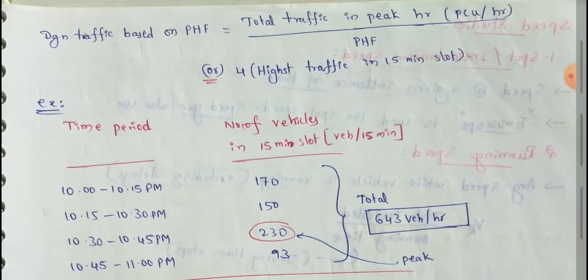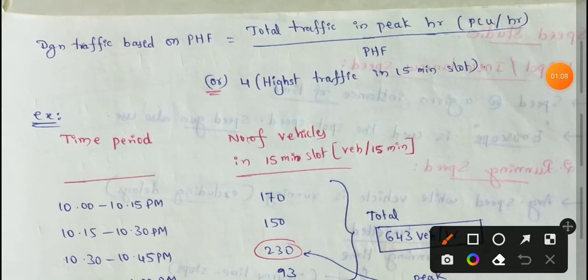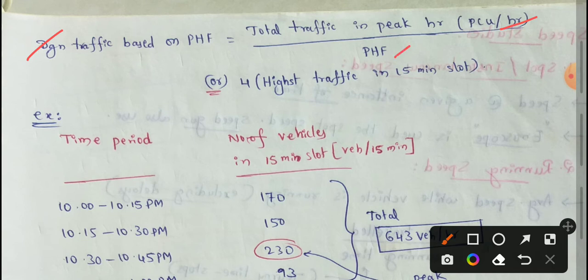Next topic: design traffic. Design traffic is based on PHF — peak hour factor. Design traffic equals total traffic in peak hour (PCU per hour) divided by peak hour factor, and also equals 4 into the highest traffic in the 15-minute slot.